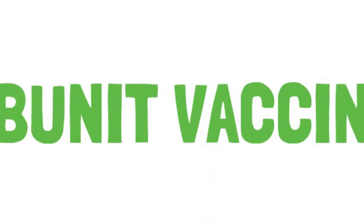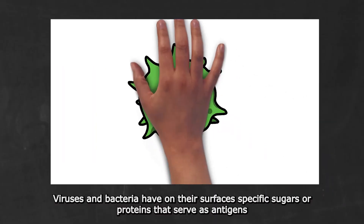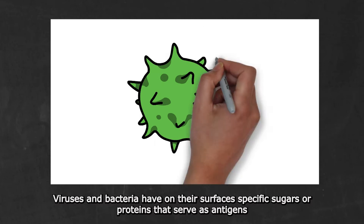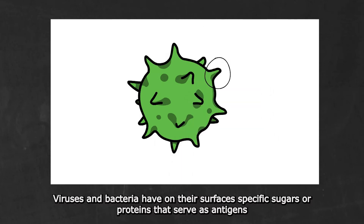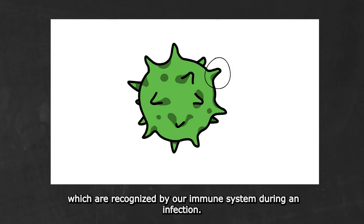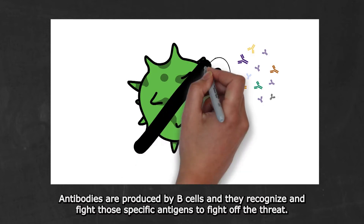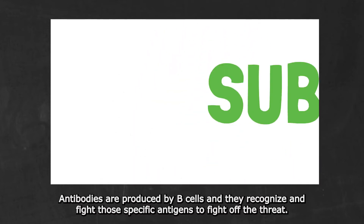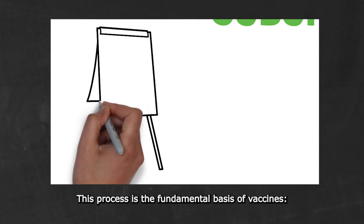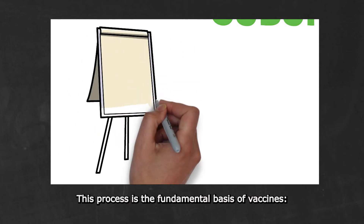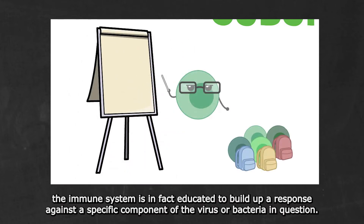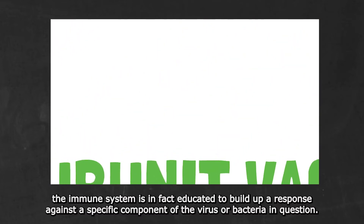Subunit Vaccines. Viruses and bacteria have on their surfaces specific sugars or proteins that serve as antigens, which are recognized by our immune system during an infection. Antibodies are produced by B cells and they recognize and fight those specific antigens to fight off the threat. This process is the fundamental basis of vaccines. The immune system is educated to build up a response against a specific component of the virus or bacteria in question.